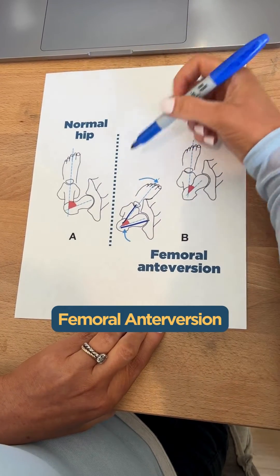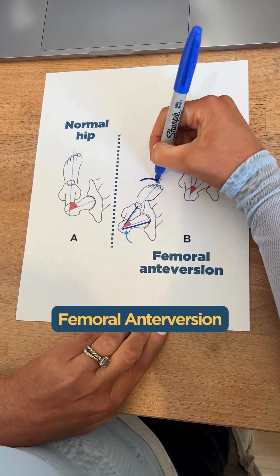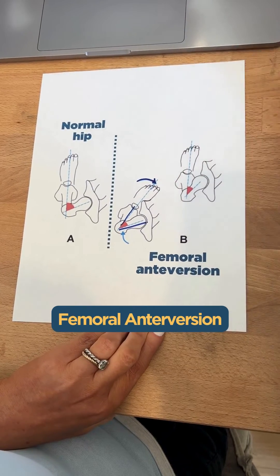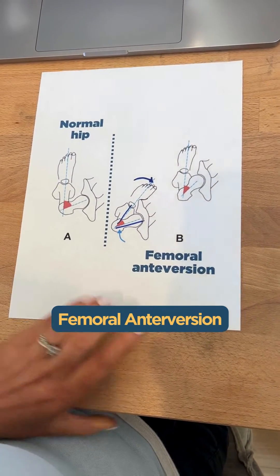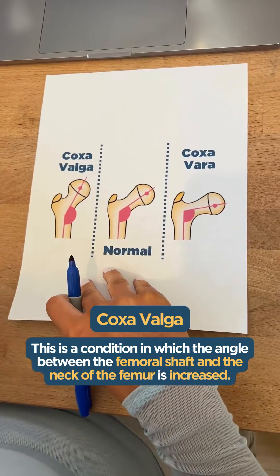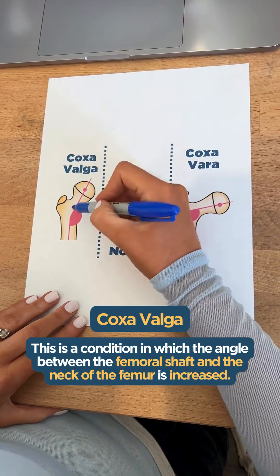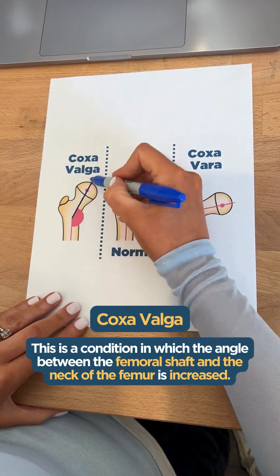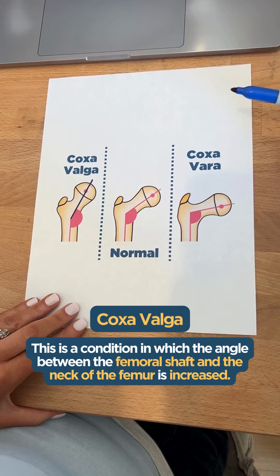This can cause the child's knees and feet to turn inward, creating that pigeon-toed effect. Next, if we look at coxa valga, we can see that the bony alignment in the hip is going to decrease as well.